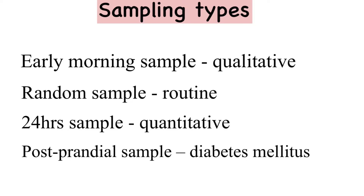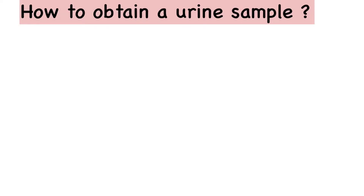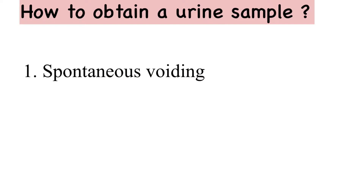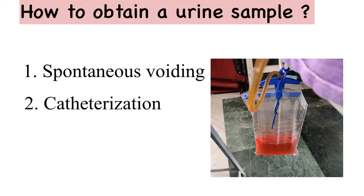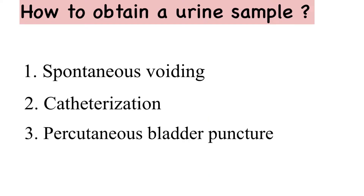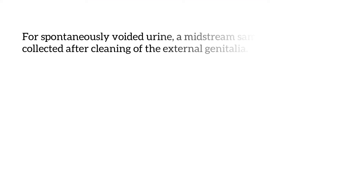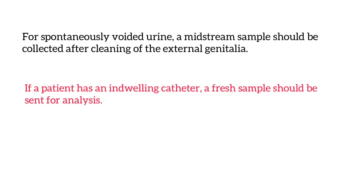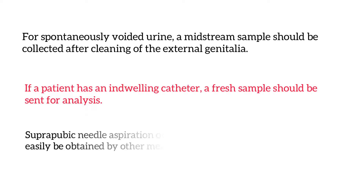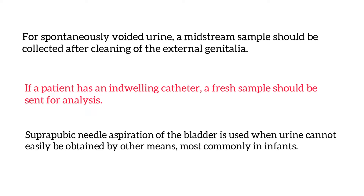Now, how to obtain a urine sample? It can be a spontaneously voided sample. It can be obtained from a catheterized patient, or it can also be obtained by a percutaneous bladder puncture. For spontaneously voided urine, a midstream sample should be collected after cleaning of the external genitalia. If a patient has an indwelling catheter, then a fresh sample should be sent for analysis. Suprapubic needle aspiration of the bladder is used when urine cannot be easily obtained by other means, and most commonly in infants.